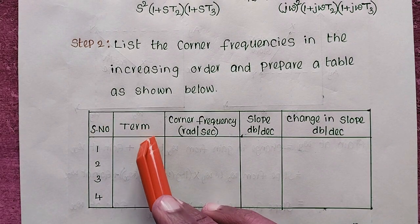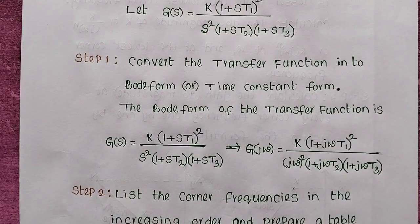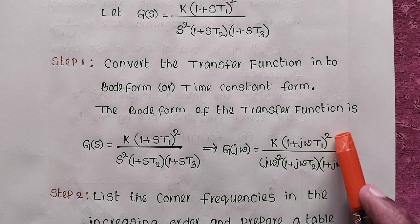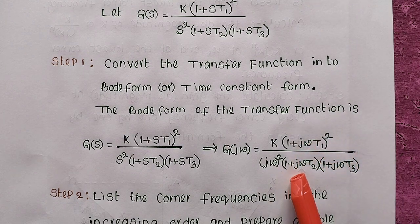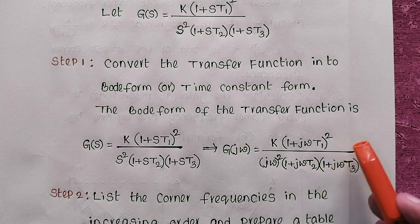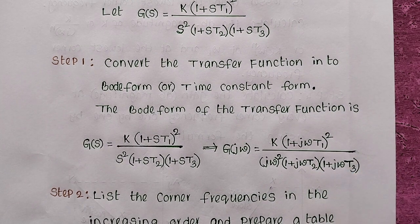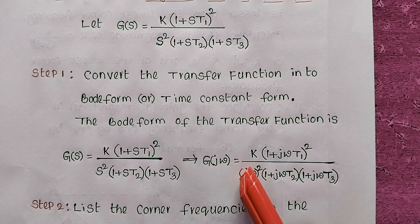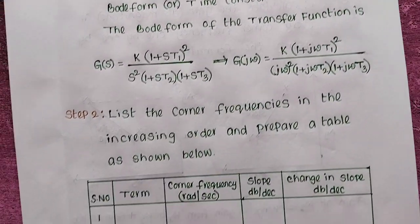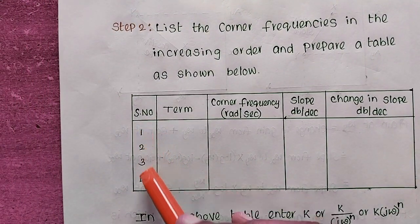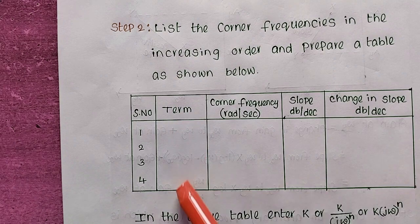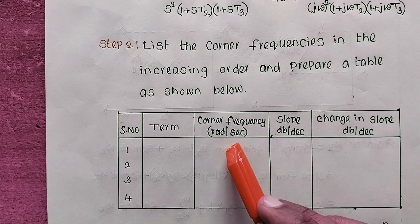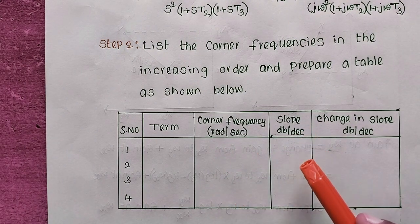The terms in the table are: k/(jω)² as the first term, (1 + jωT1)² as the second term, 1/(1 + jωT2) as the third term, and 1/(1 + jωT3) as the fourth term. There are four terms total, so serial numbers run from 1 to 4. We list all terms, then fill in corner frequencies in radians per second.